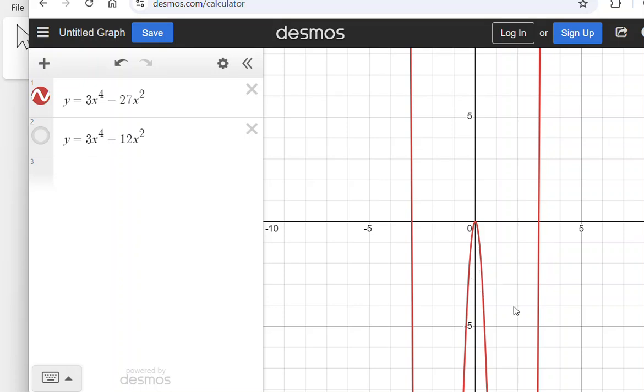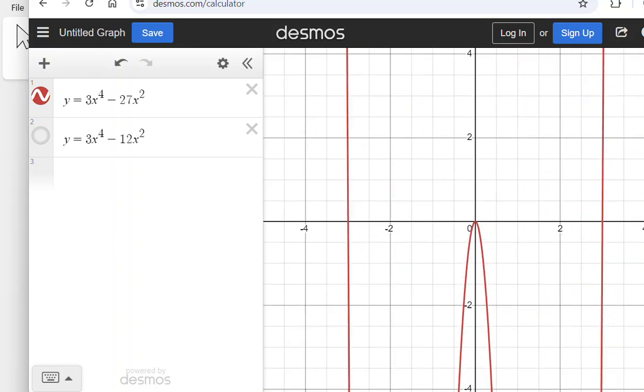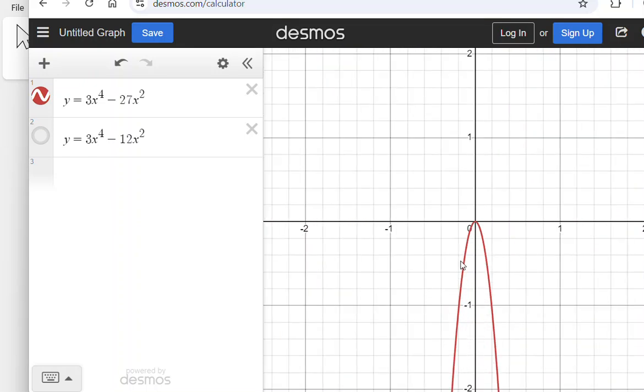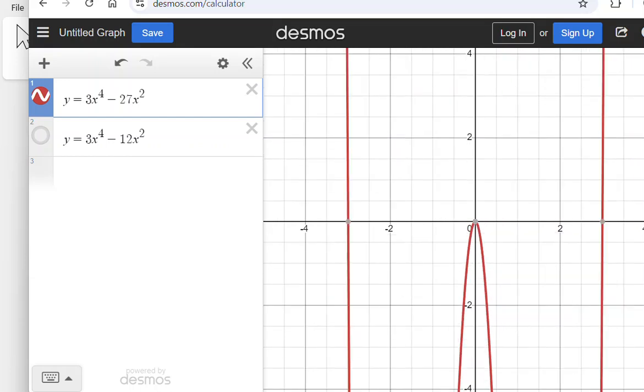So it approaches, and I can zoom in here if I want to see it even more closely. It approaches the x-axis. It touches the x-axis, but it does not go through the x-axis. It turns around and goes back downward. So that's different from these other two x-intercepts.